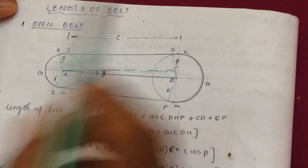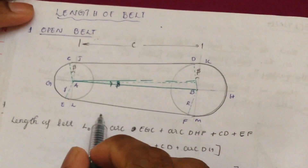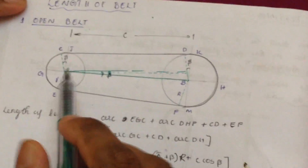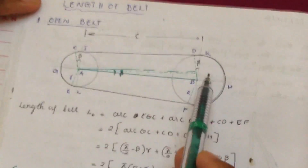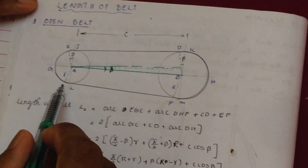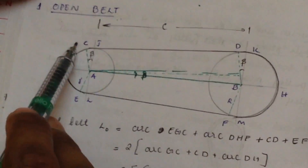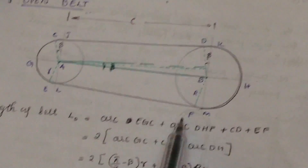After deriving the length of belt for an open belt drive, first let us consider this diagram. Here this is the driving pulley, and this is the driven pulley. The total length of belt is equal to arc length EGC plus CD plus DHF plus EF — this is the total length of belt.